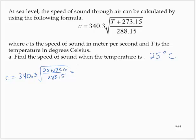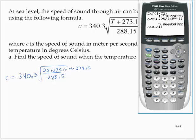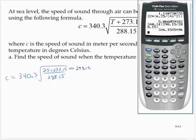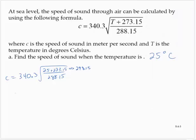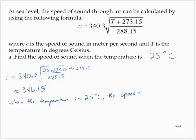That square root numerator is 298.15. So we have the square root of 298.15 divided by 288.15. That gives us 346.15. So when the temperature is 25 degrees Celsius, the speed of sound is 346.15 meters per second.